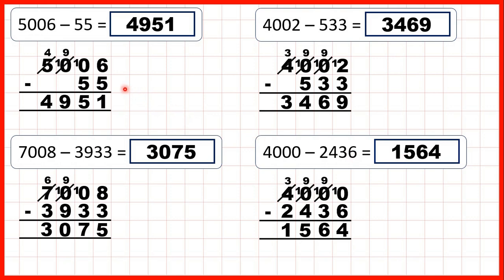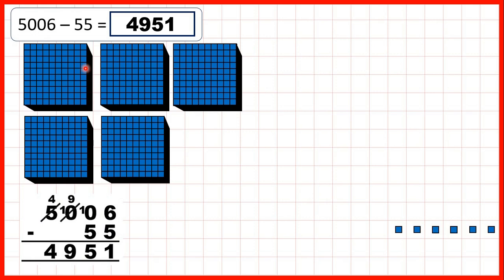Now let's take a closer look at these questions and see why the method works — why we keep going to the left, 1 less, 1 in front, and then we can keep doing that until we've got 1 in front of the digit that we need, or the place value column that we're working with.